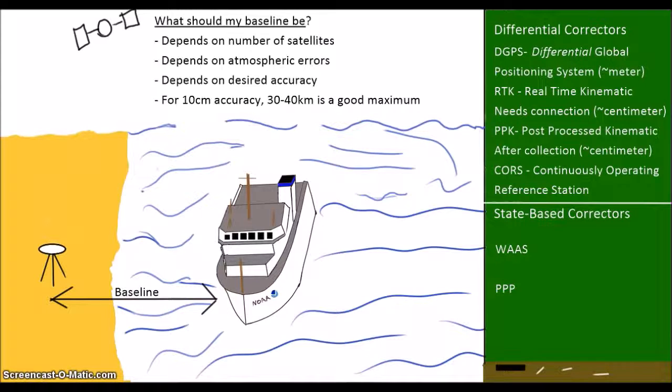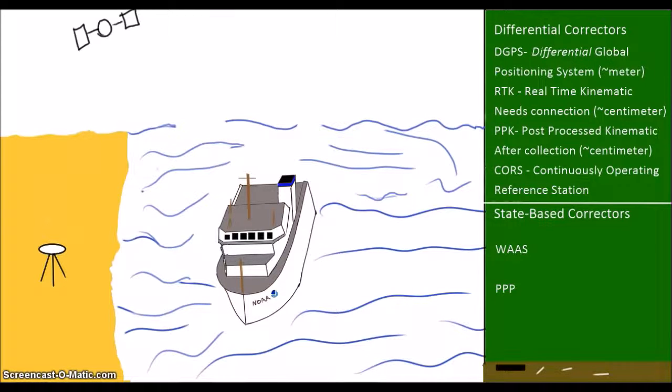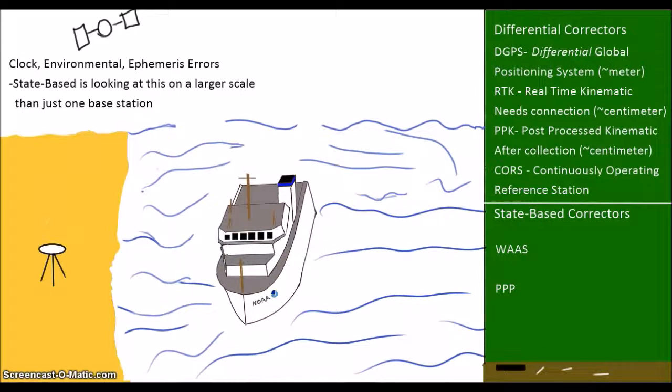Let's move on to the state-based approach. Rather than measuring the total errors directly at one location, a state-based approach tries to figure out all the component pieces that make up the positioning error and do a better job than traditional standalone GPS. This approach is generally known as precise point positioning, or PPP. State-based approaches can either be real-time or post-processed.